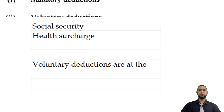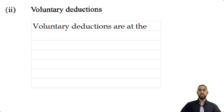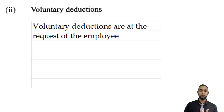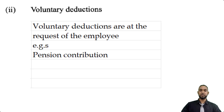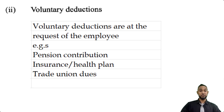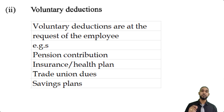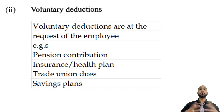Now, with respect to voluntary deductions, these are at the request of the employee. The employee could have things to which he or she prefers or wants to contribute to. These could include things such as pensions, insurance or health plan, trade union dues, and savings plans. If you have any other examples of either statutory or voluntary deductions and you want to share them, please feel free to leave them in the comment section below.